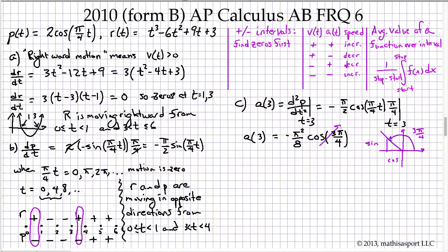This is a 45 degree angle there between this line and the x-axis. And so we know that this is the same as negative root 2 over 2. Put all of that together and we get that a(3) equals positive π² times root 2 over 16. π² root 2 over 16.